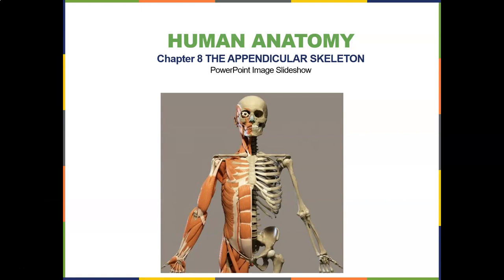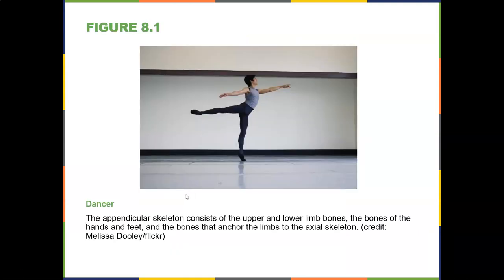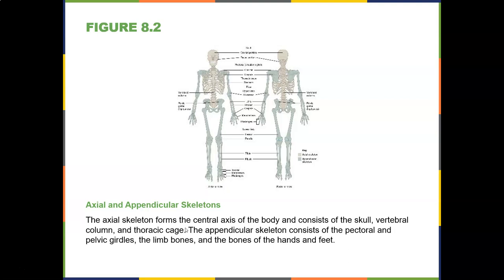Nice work on the axial skeleton. Now we go on to the appendicular skeleton, which is the pectoral girdle, the upper extremity, the pelvis, and the lower extremity. The appendicular skeleton consists of the upper and lower limbs, the bones of the hands and feet, and the bones that anchor the limbs to the axial skeleton. The axial skeleton forms the central axis of the body and consists of the skull, vertebral column, and thoracic cage. The appendicular skeleton consists of the pectoral and pelvic girdles, the limb bones, and the bones of the hands and feet.